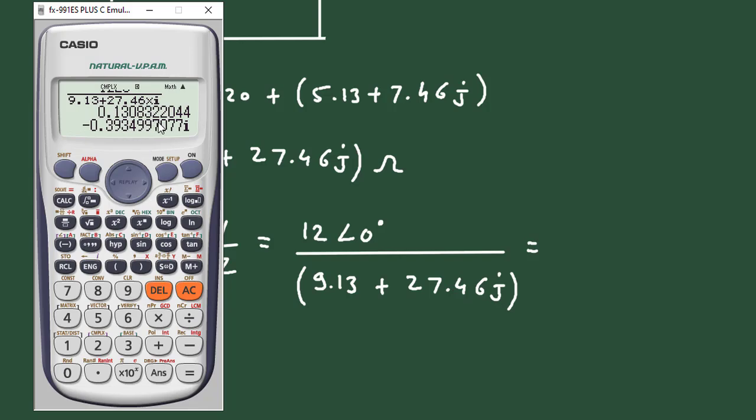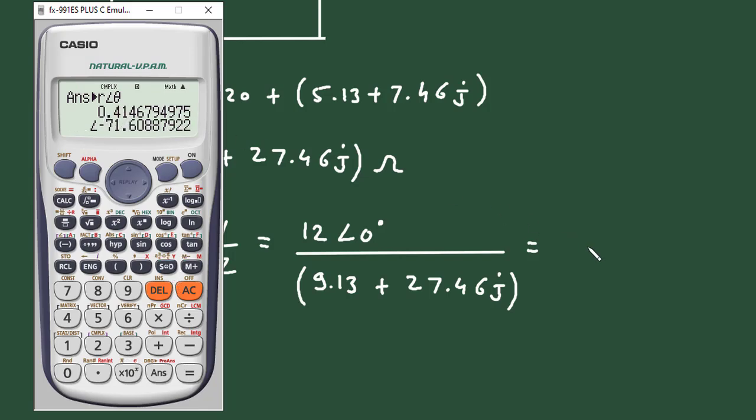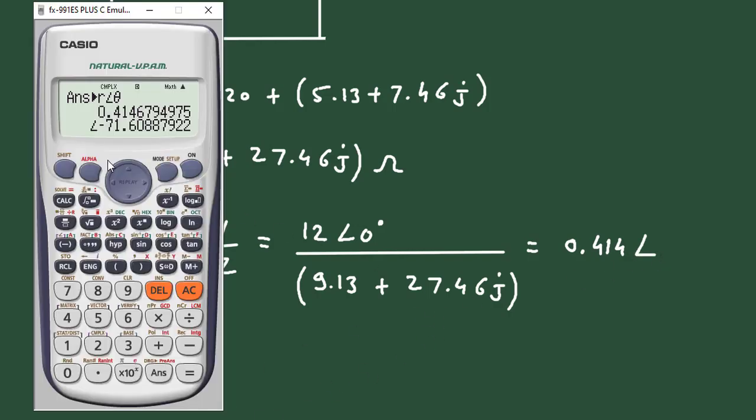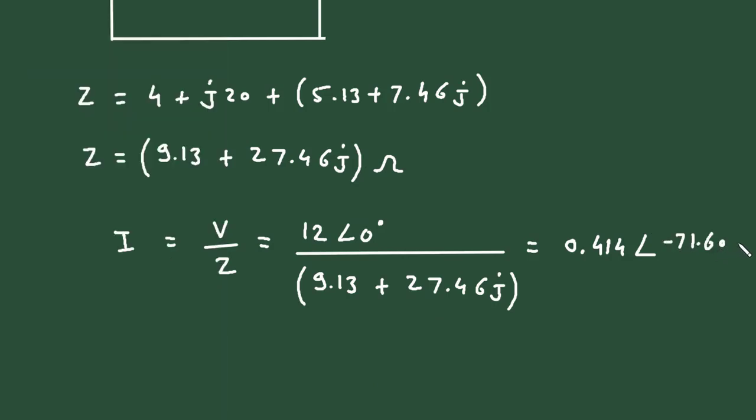So this is in rectangular form. In polar form this will be 0.414 at an angle -71.60 degrees. And since it is current, its unit will be ampere.